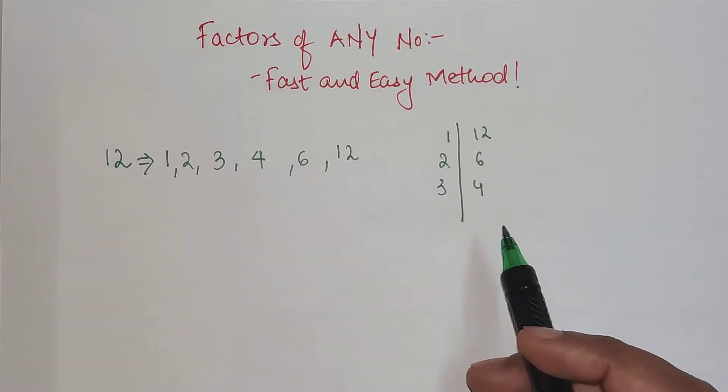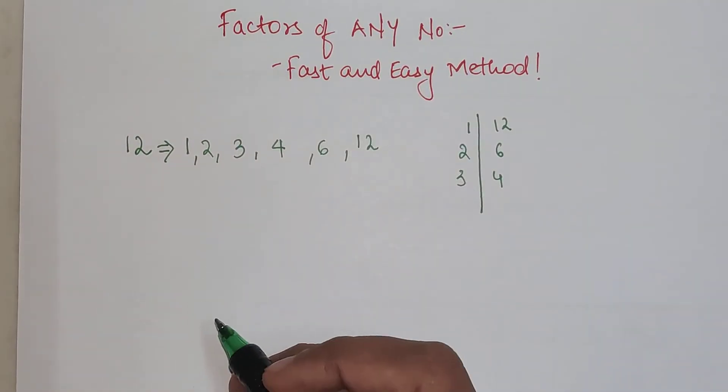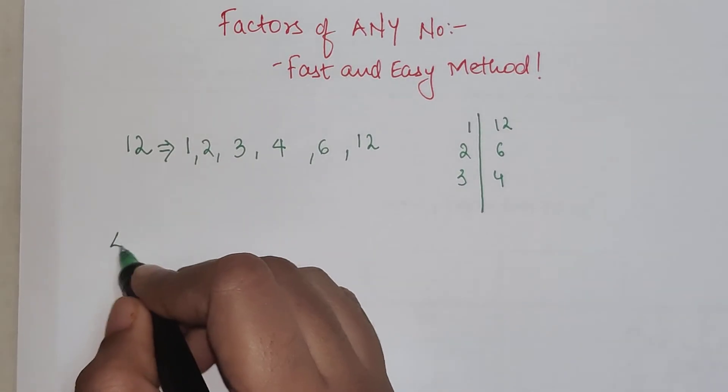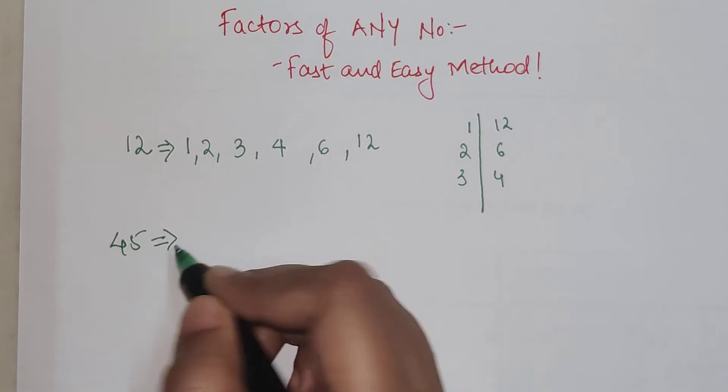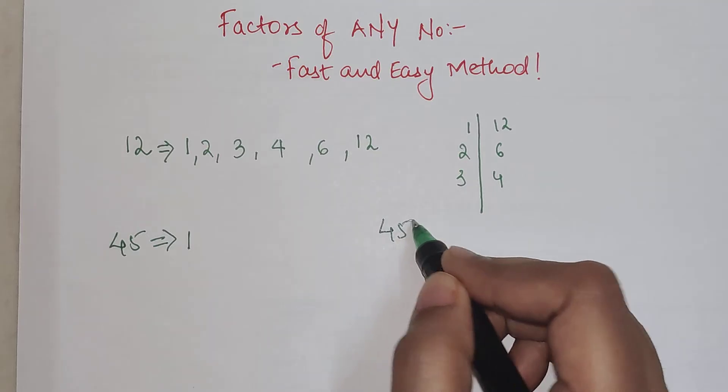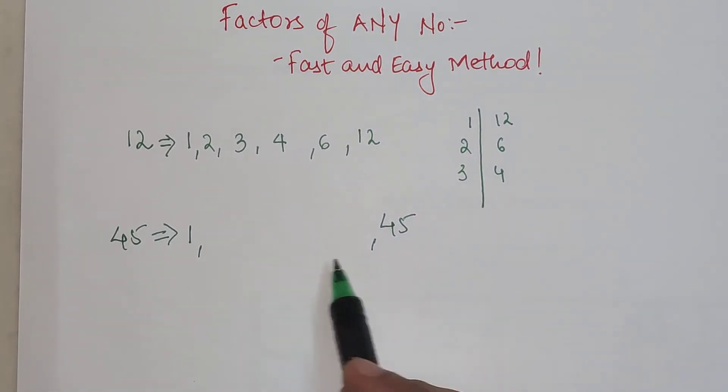Coming to the point where I was telling you that I'm going to deal with only odd numbers. Let's start with 45. We know that 1 and 45 will be the factors.